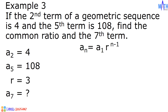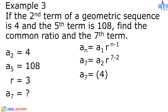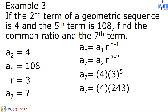Now let us solve for the 7th term. In our formula, a sub n becomes a sub 7. Instead of a sub 1, we can use a sub 2, giving r raised to 7 minus 2. If we used a sub 5, the exponent would become 7 minus 5. Substituting: a sub 7 equals 4 times 3 raised to 5. 3 raised to 5 is equal to 243. 4 times 243 is equal to 972. And this is the 7th term of the geometric sequence having 2nd term as 4 and 5th term as 108.